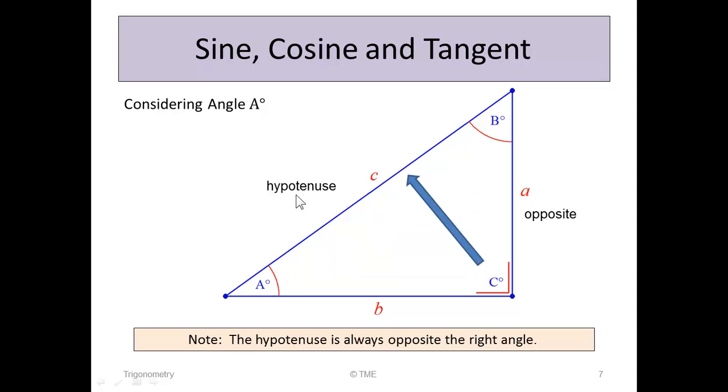Given that the hypotenuse is always opposite the 90-degree angle, once we've defined the opposite and the hypotenuse, the adjacent is the remaining one. So for angle A, this is the opposite, this is the adjacent, and this is the hypotenuse.